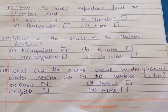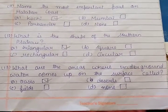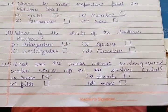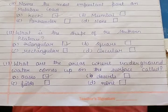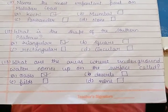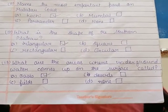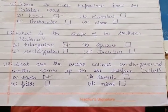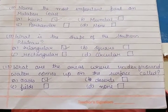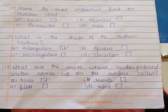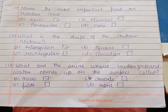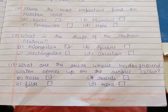Thirteenth: What are the areas in a desert where underground water comes up to the surface called? In desert areas where underground water reaches the surface level, agriculture and plants like date palms can grow. Options: A houses, B desert, C fields, D none. And the answer is oases. Oases are the areas where underground water comes up to the surface.